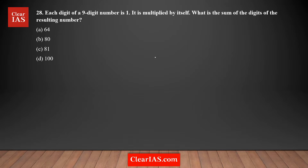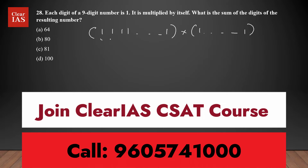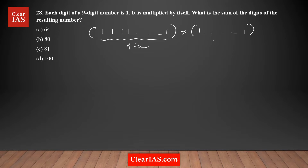Each digit of a nine-digit number is one, so you have 111111111 multiplied by itself — nine times total. You get a product, and the question asks you to find what is the sum of the digits of the resulting number. It's not practical to multiply these big numbers directly.